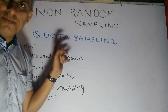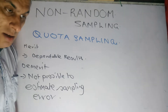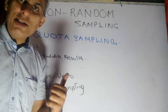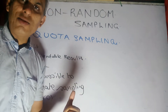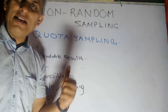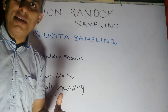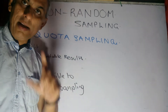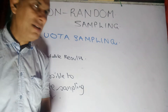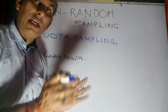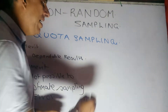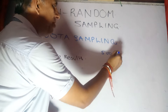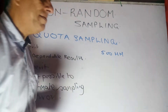Students, to understand quota sampling, the best way is to recall the stratified sampling which you did under restricted random sampling. If you remember that example, there were around 500 households in the city.